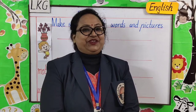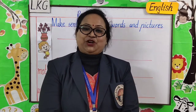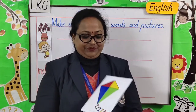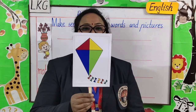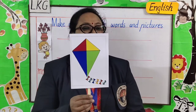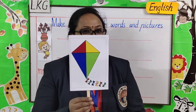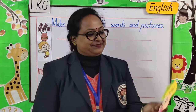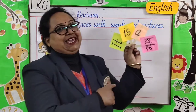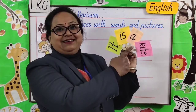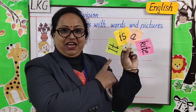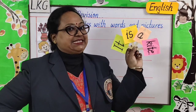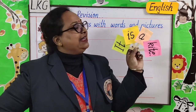Children, moving on to our next topic — make sentences. What is it? It is a picture of a kite. So let's frame a sentence: It is a kite. We have framed a sentence with kite. It is a kite.